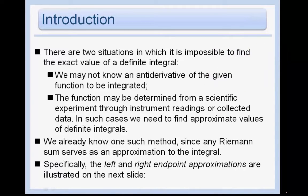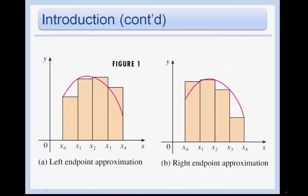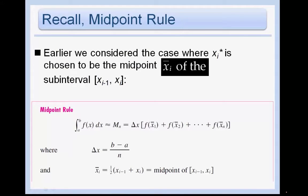We already know one such method, since any Riemann sum serves as an approximation to the integral. Specifically, the left and right endpoint approximations are illustrated on the next slide. In figure A, we have the left endpoint approximation of the area under the curve, and in figure B, we have the right endpoint approximation. We also learned the midpoint rule, where we chose an x-bar right in between the left and right endpoints as our midpoint.